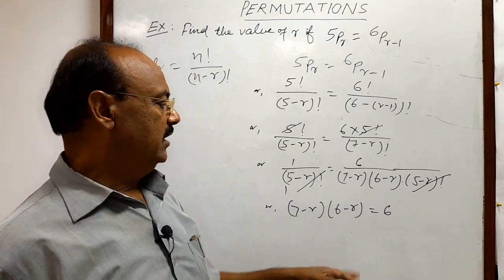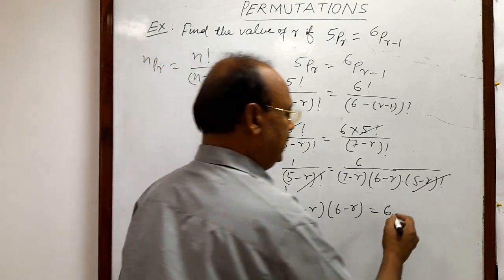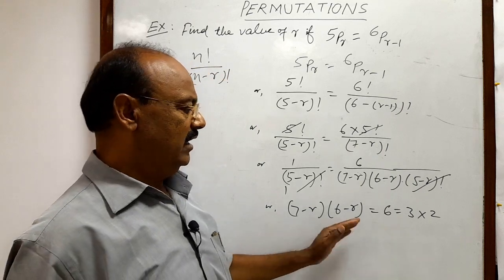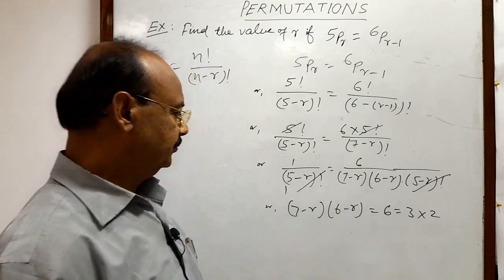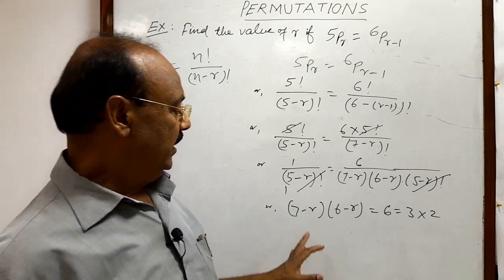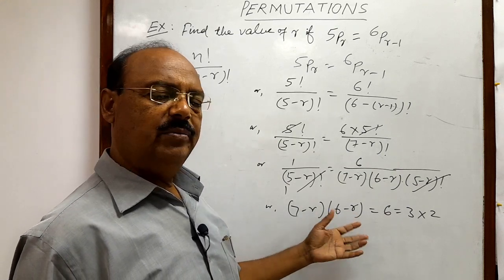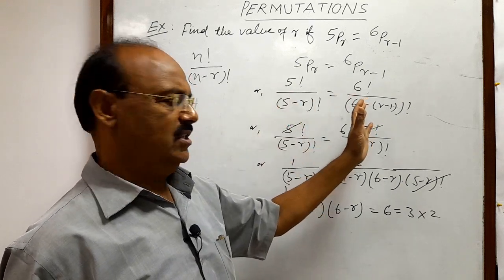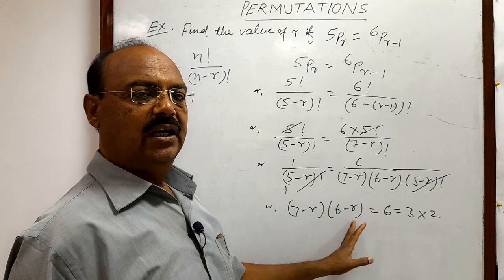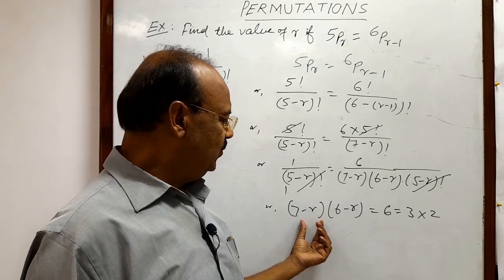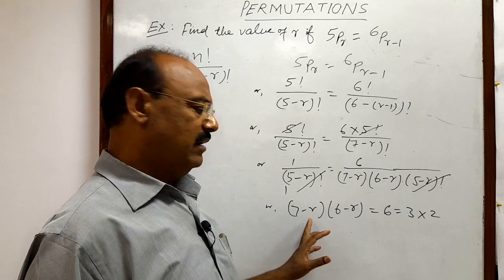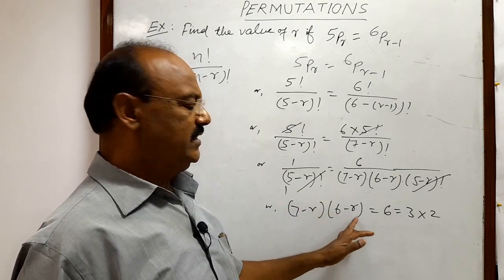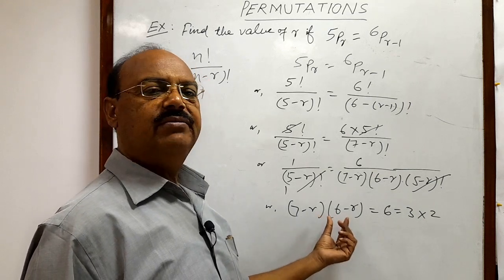Another very simple method is that this 6 can be written as 3 into 2. We can solve it very easily. Here 7 minus r and 6 minus r both will be integers, because in the factorial notation that is a multiplication of positive integers. So these are integers, and importantly, these are consecutive integers. This is 7 minus r, and if you decrease by 1, subtract by 1, it will be 6 minus r. So this is two consecutive integers.